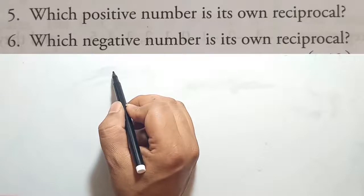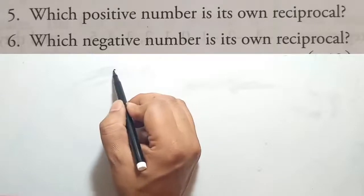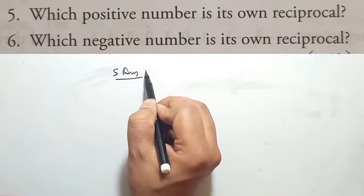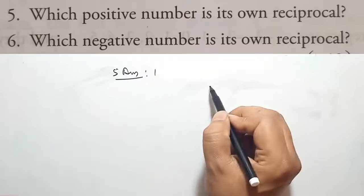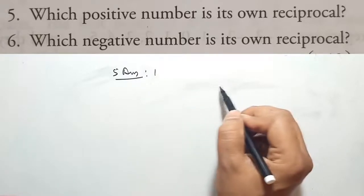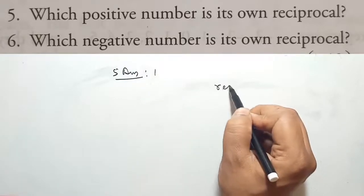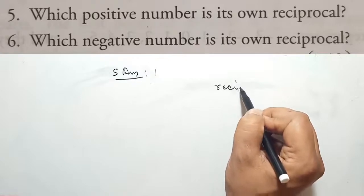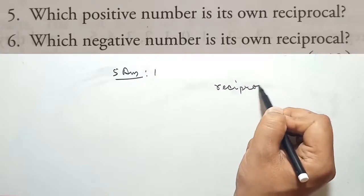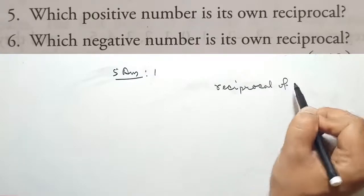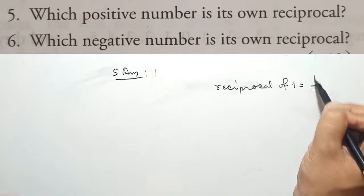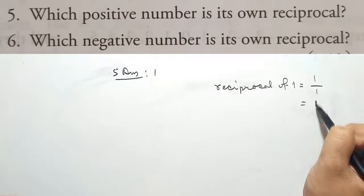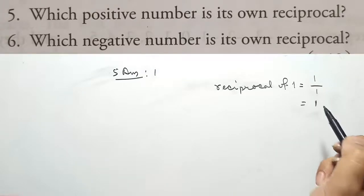Which positive number is its own reciprocal? The answer is 1. If we find the reciprocal of 1, it equals 1 by 1, which is 1 itself. Therefore, the answer is 1.